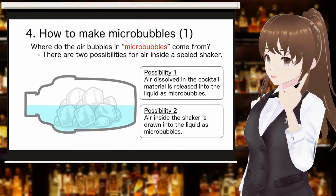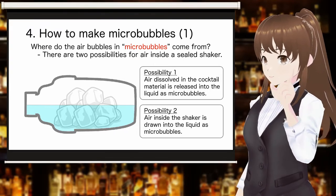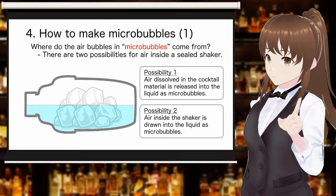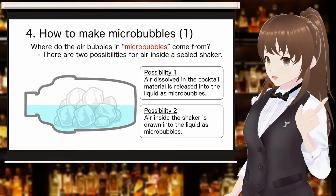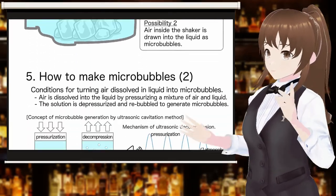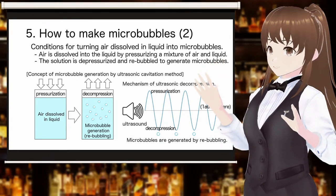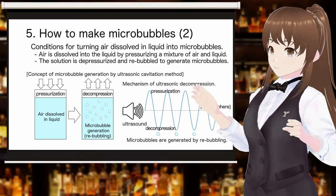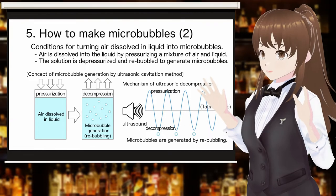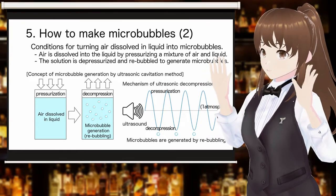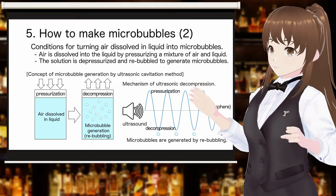Let's think about where the air that is the source of the microbubbles created in the sealed environment inside the shaker comes from. There are two possibilities. One possibility is that air dissolved in the cocktail ingredients was released into the liquid as microbubbles. Two conditions are required to turn air dissolved in a liquid into microbubbles: the air must be dissolved in the liquid by pressurization, and then rebubbled by depressurizing it. There is a theory that ultrasonic waves generated by the shakes generate microbubbles via ultrasonic cavitation, in which microbubbles are generated using the decompressed state created by ultrasonic vibration.